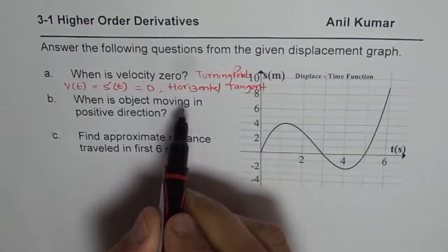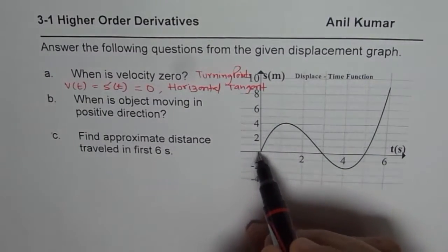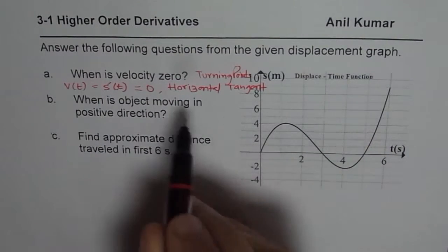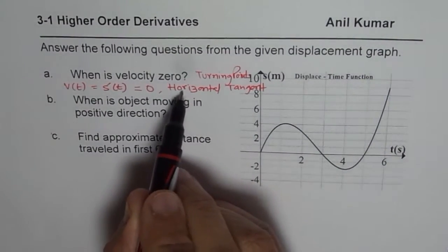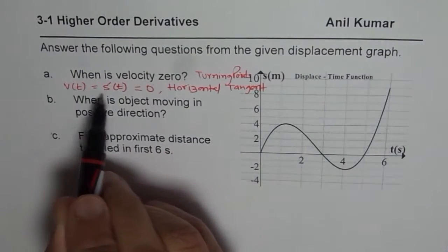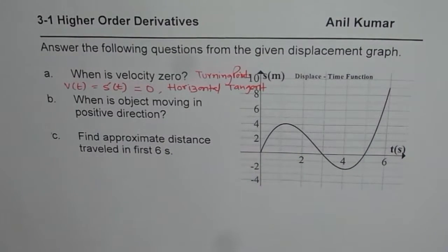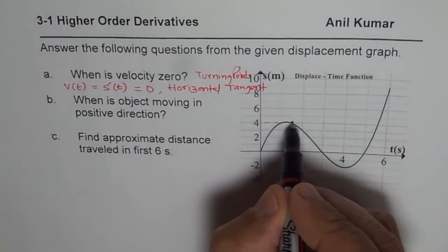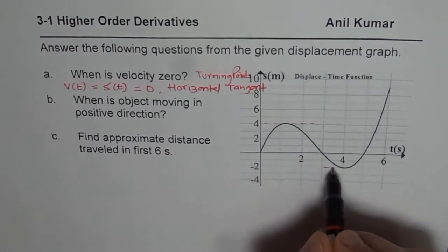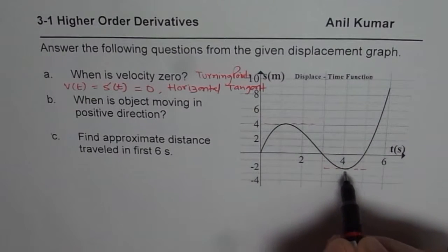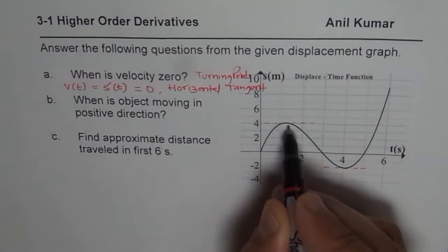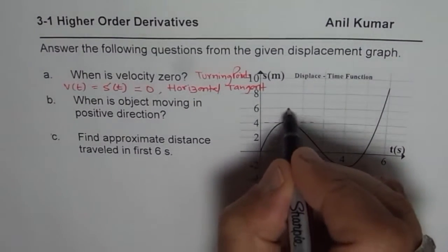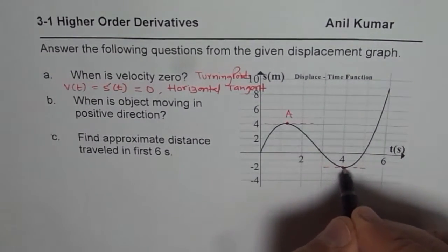So it really means that where on the graph of displacement do you have horizontal tangent? Because at that point velocity will be 0, right? So let's look into the graph and we can clearly see these turning points are the ones where the tangent will be horizontal. So these are the points where the velocity is going to be 0. So let me mark those points as A and B.